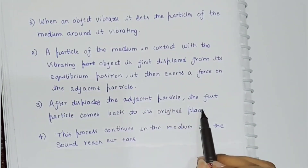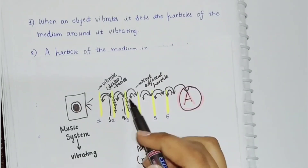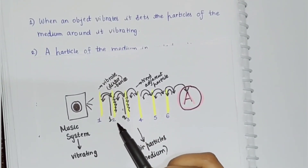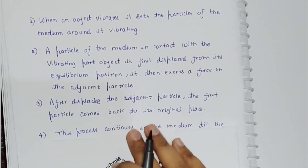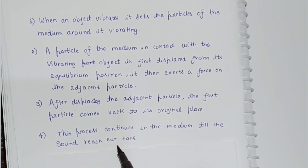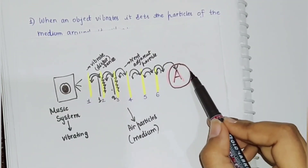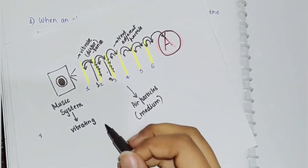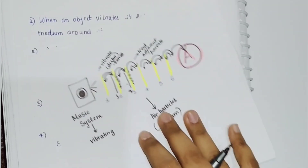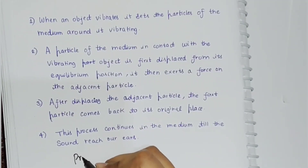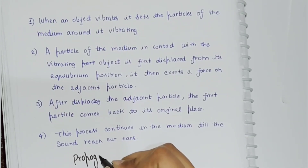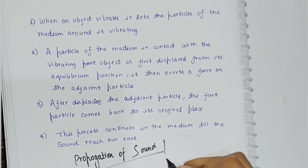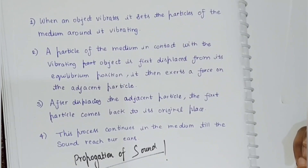After displacing the adjacent particle, the first particle comes back to its original position. The next adjacent particle is then disturbed, and the process continues until the sound reaches the listener. This phenomenon — of sound traveling from the music system through the medium to person A — we call the propagation of sound.